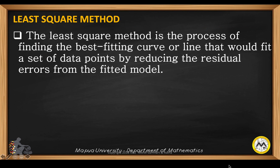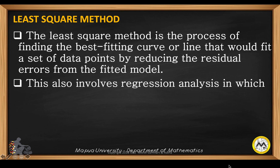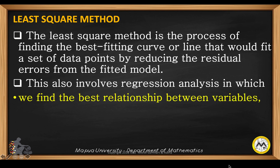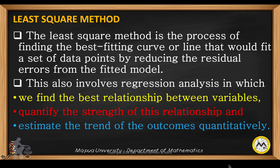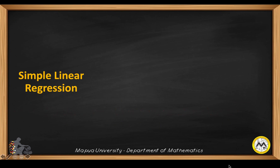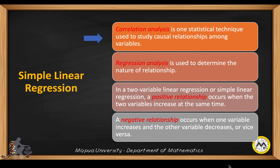The least squares method is the process of finding the best fitting curve or line that would fit a set of data points by reducing the residual errors from the fitted model. This also involves regression analysis in which we find the best relationship between variables, quantify the strength of this relationship, and then estimate the trend of the outcomes quantitatively. Correlation analysis is a statistical technique used to study causal relationships among variables.